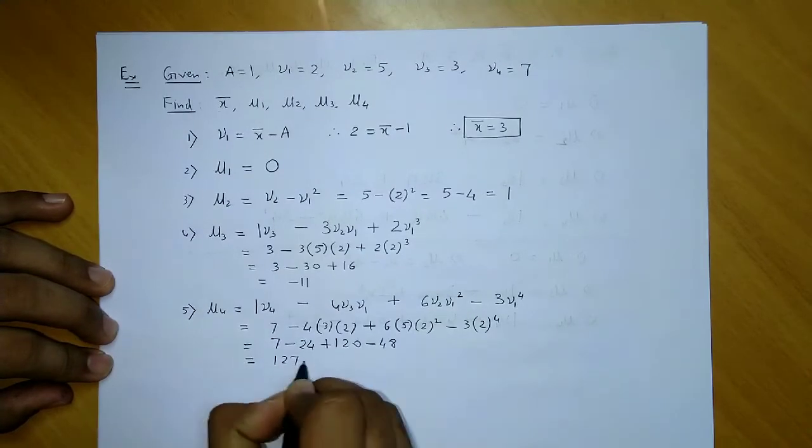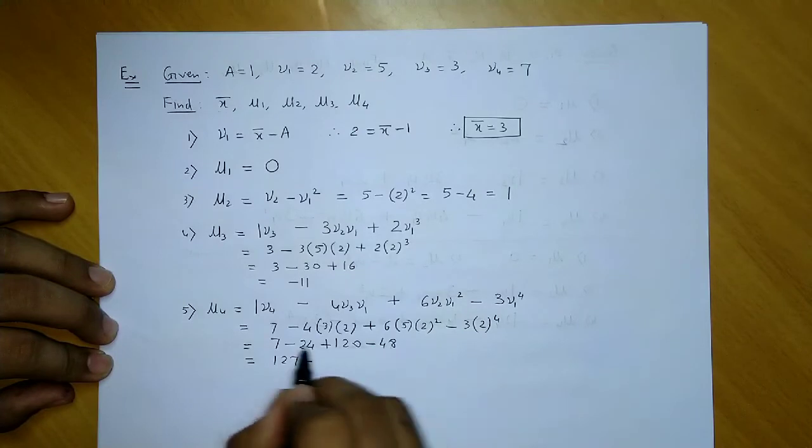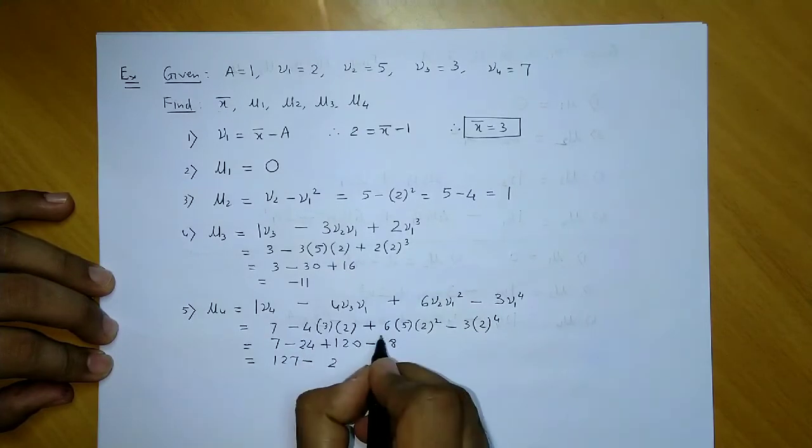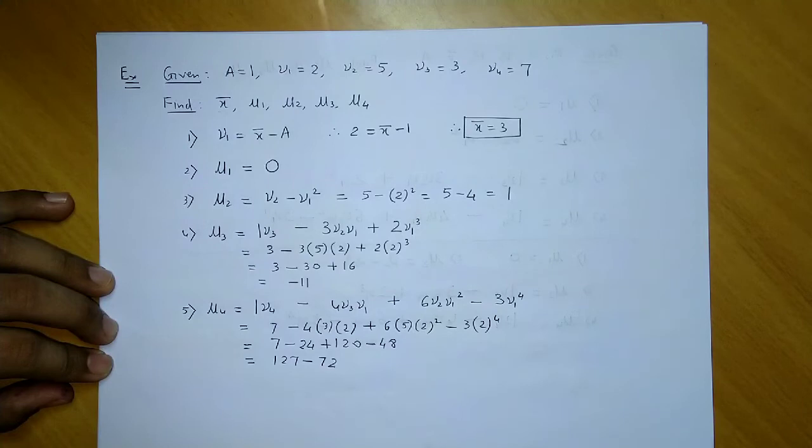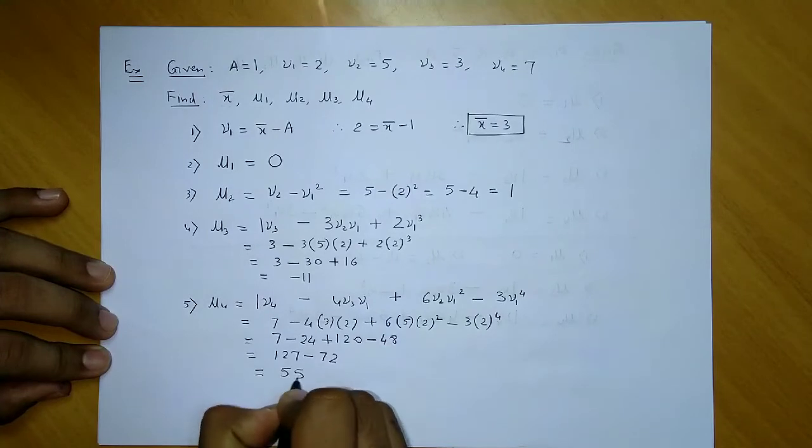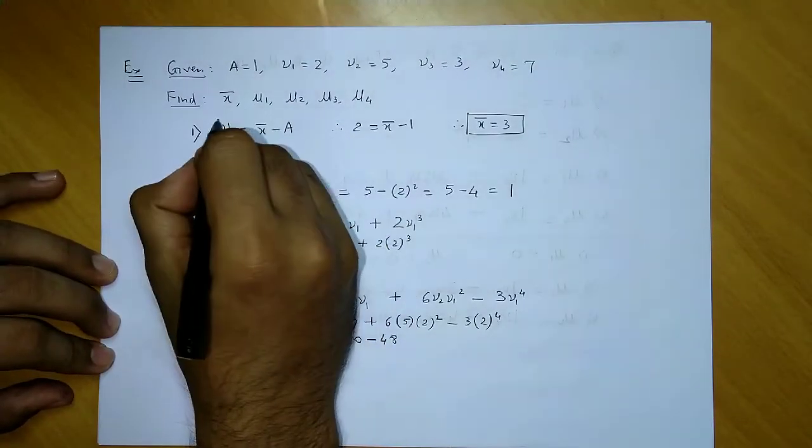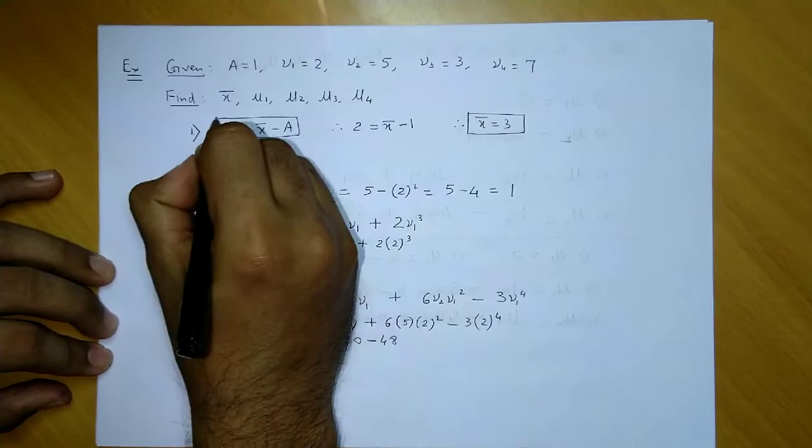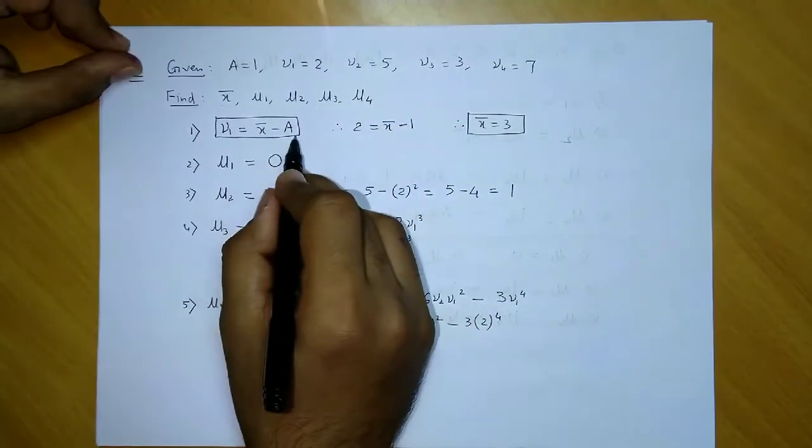If we proceed further and simplify: 120 + 7 = 127, minus (24 + 48 = 72). So if we subtract, the final answer is 55.